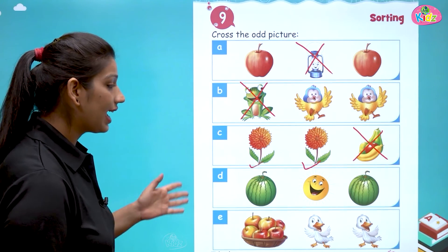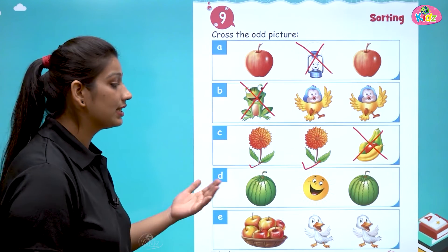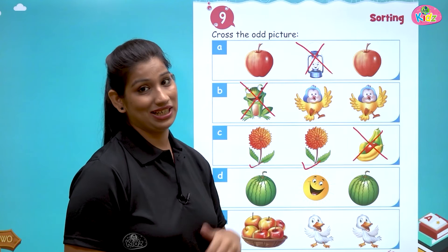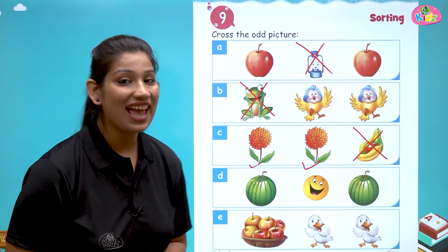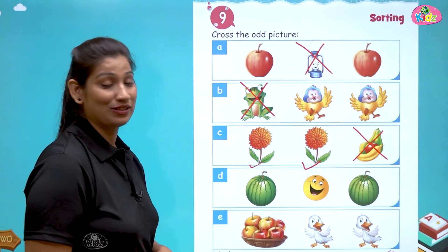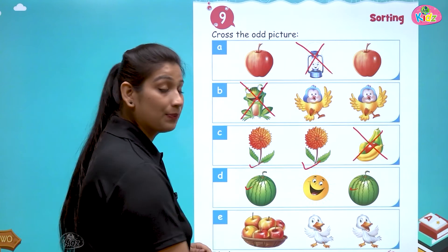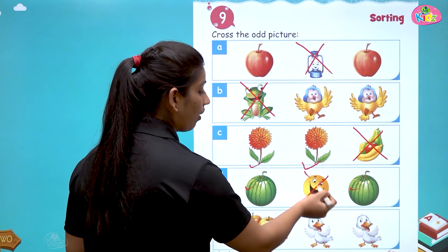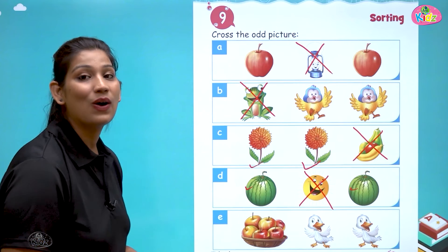The next is watermelon, sun, watermelon. Which is odd, students? Yes — sun is odd, because two pictures are of watermelon. The sun is odd.